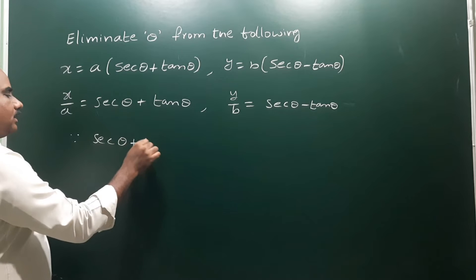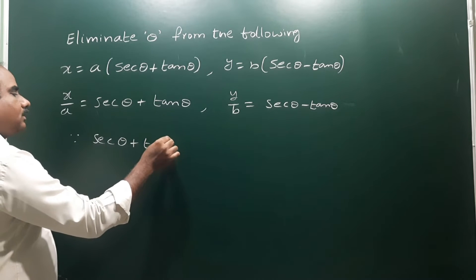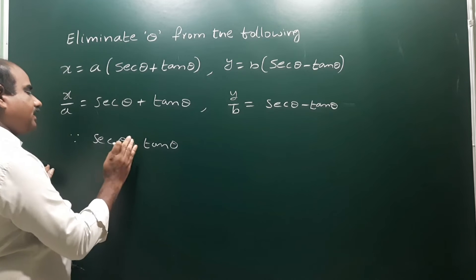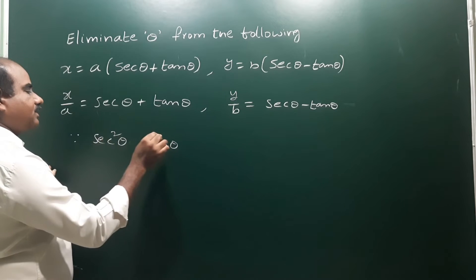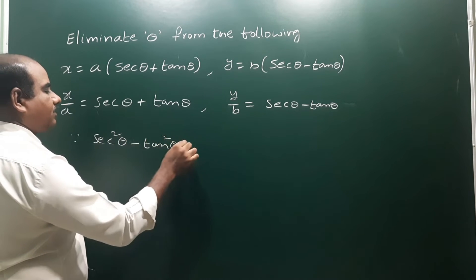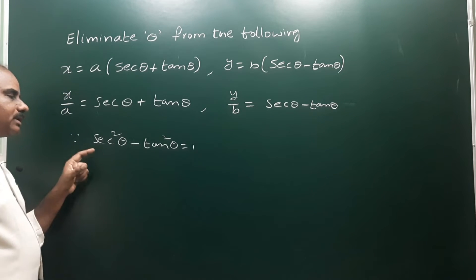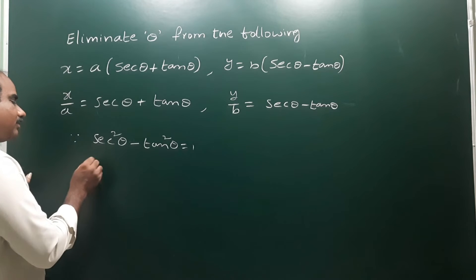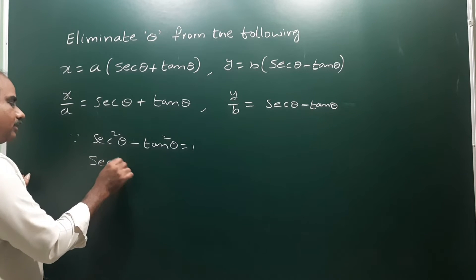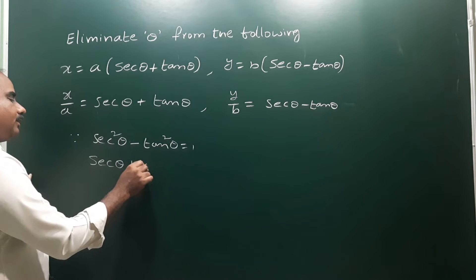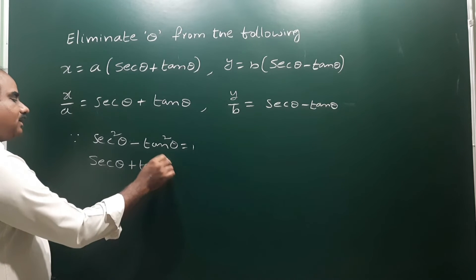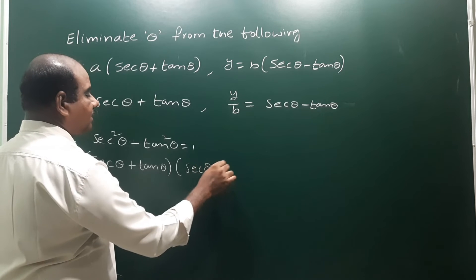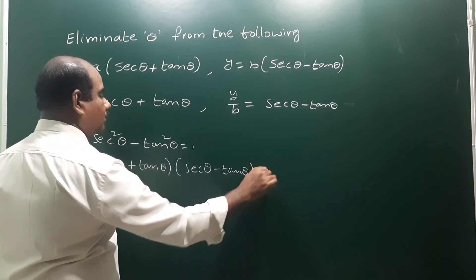Since secant squared theta minus tan squared theta is equal to 1, we have a formula like this. Using the a squared minus b squared formula — a plus b into a minus b — we get: secant theta plus tan theta into secant theta minus tan theta is equal to 1.